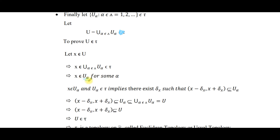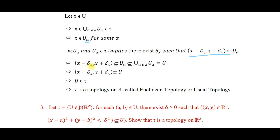Since x ∈ U_α and U_α ∈ τ, there exists δ > 0 such that (x−δ, x+δ) ⊆ U_α. Since any set is a subset of its union, U_α ⊆ ∪U_α = U. Therefore this open interval (x−δ, x+δ) is a subset of U, so U belongs to τ. All three conditions are satisfied, hence τ is a topology on ℝ, called the Euclidean topology or usual topology.